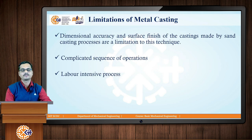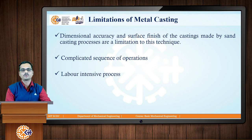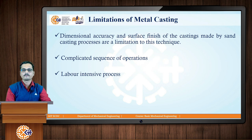Along with these advantages, there are certain limitations associated with metal casting. The first limitation is that dimensional accuracy and surface finish of castings produced by sand casting are inferior compared to other manufacturing processes. These limitations can be overcome by shifting to die casting. The second limitation is that casting involves a complicated sequence of operations — in each of the six steps there are numerous parameters that must be controlled, making it a very complex process. It is also a labor-intensive process requiring huge manpower, especially in sand casting.